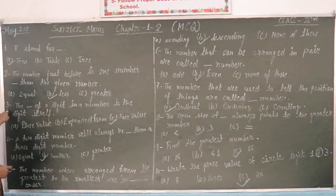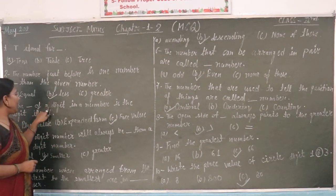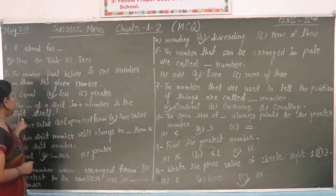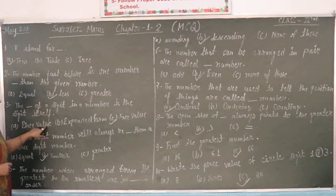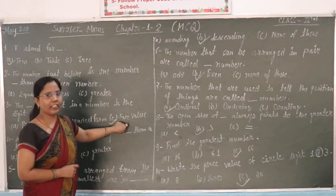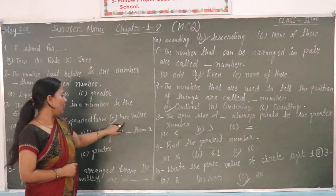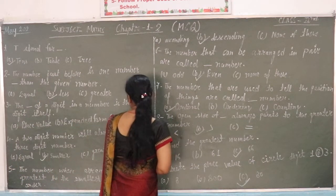Third question: The blank of a digit in a number is the digit itself. Options: 10, place value, expanded form, face value. The answer is face value.